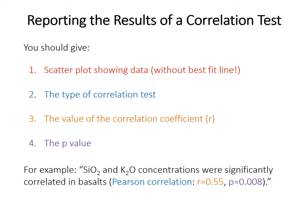When reporting the results of a correlation test, you should include a scatter plot showing the data, but don't fit a trend line — we're just testing for association, not a linear relationship. Describe the type of test you did, report the correlation coefficient r, and the p-value. The r value is a measure of the strength of association. The p-value tells you indirectly how likely the association is to be non-random, but it's also affected by sample size, so r is what really conveys how strong the association is.